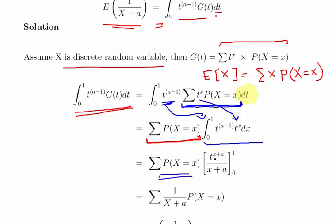So we end up with t to the power of x plus a divided by x plus a, integrated from 0 to 1. So when we evaluate, well I just actually evaluated at 0, we end up with just 0. So we end up with 0 over x minus a to be correct.